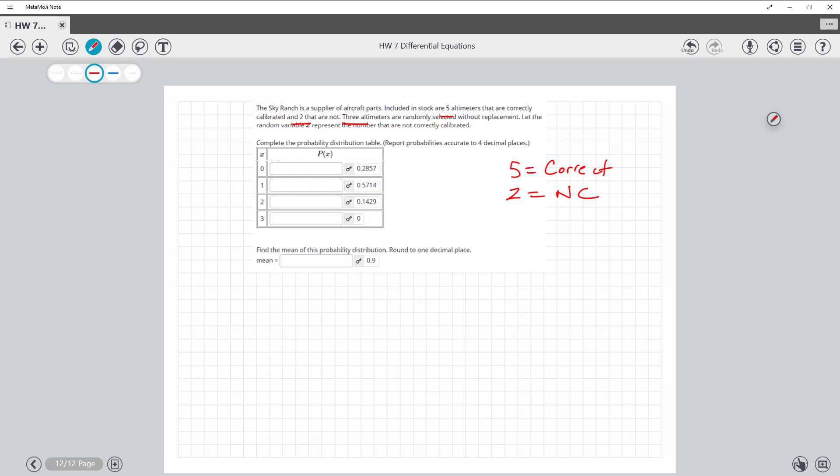So to find, notice it says that we're choosing three. To find the probability that x equals zero, and zero, notice it says x represents the numbers that are not correctly calibrated. So if none of them are correctly calibrated, that means the probability that they're all good. So probability calibrated, and so the first one's good, the second one's good, and the third one's good.